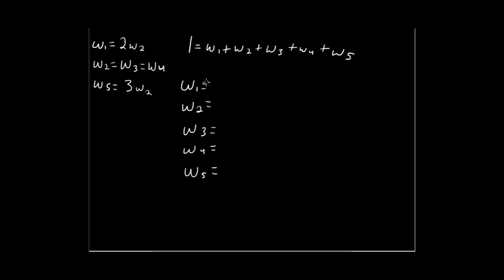Down here I've written out all the different weights and I'm going to show you how we're going to represent those. Basically, outcomes 2, 3, and 4 haven't been given any additional value — they're not equal to twice anything else, they're just all equal to each other. So let's think about them as tennis balls. We'll take outcomes 2, 3, and 4 and make them equal to just one tennis ball each. Then the weight of outcome 1 is twice the weight of outcome 2, so we can represent that as two tennis balls.